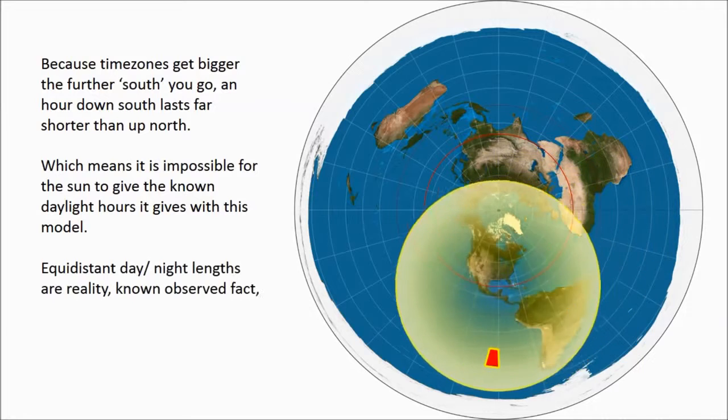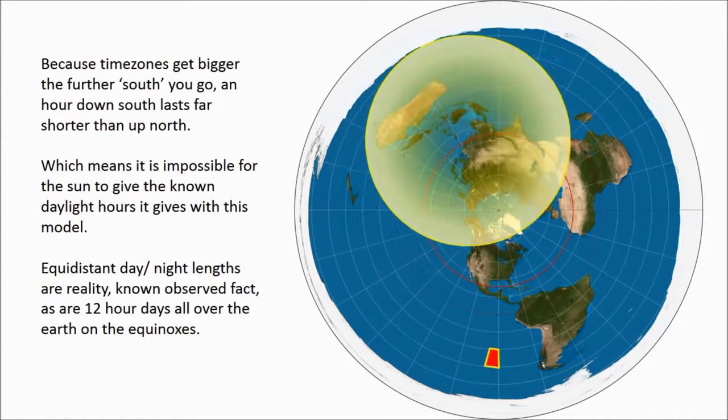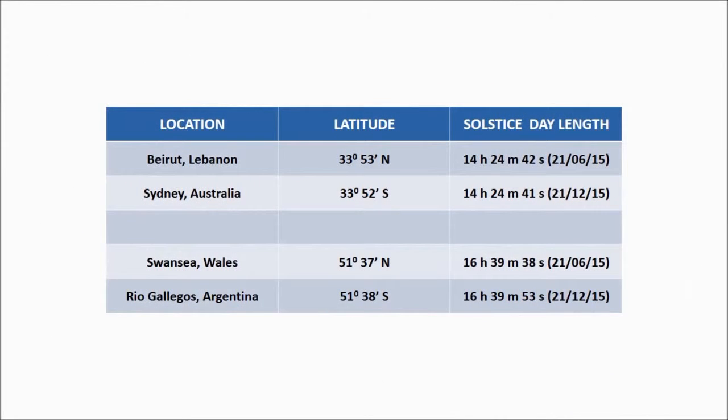Then we have the equidistant solstices, six months apart, north and south. Here's two pairs of examples. Pause, check it out for yourself. Go check some other places. Do your own research. But this is truth.